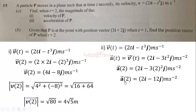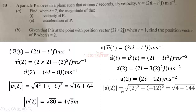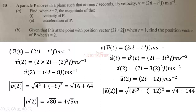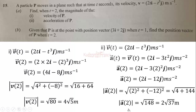The magnitude of the acceleration equals the square root of the sum of the squared components of the vector, which gives us root 148, or 2 root 37 meters per second squared.